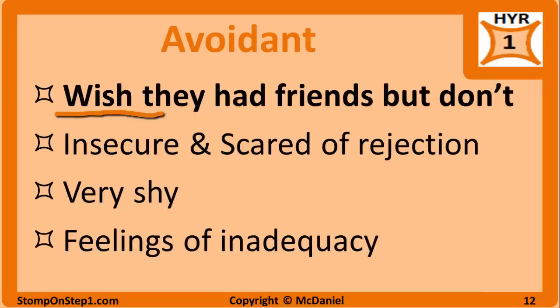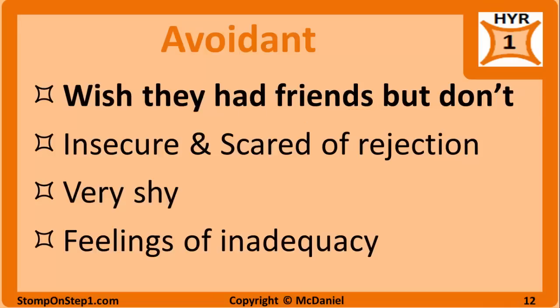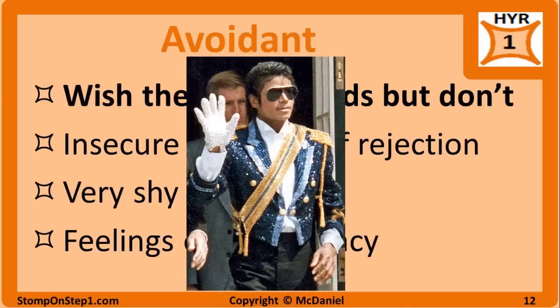People with avoidant personality disorder want to have friends but are usually socially isolated because they are insecure, scared of rejection, and overly sensitive to negative criticism. They are painfully shy with feelings of inadequacy. Don't confuse this with schizoid, schizotypal, or paranoid people who don't have friends because they don't want friends, or with narcissistic people who often don't have friends because they are jerks. Examples include Michael Jackson, who would build tunnels or his own theme park to avoid people, and Heisman Trophy winner Ricky Williams, who once gave an interview with his helmet still on because he felt inadequate when interacting with the media.